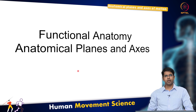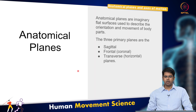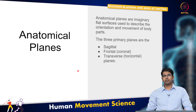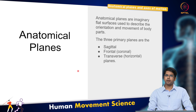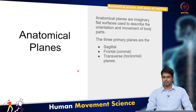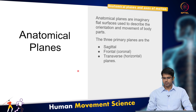Let us dive into anatomical planes and axes. What are anatomical planes? These are imaginary flat surfaces which are used to describe the orientation of the human body and to describe the movements that happen within the body. There are three planes: sagittal, frontal, and transverse. Let us look at these individual planes.